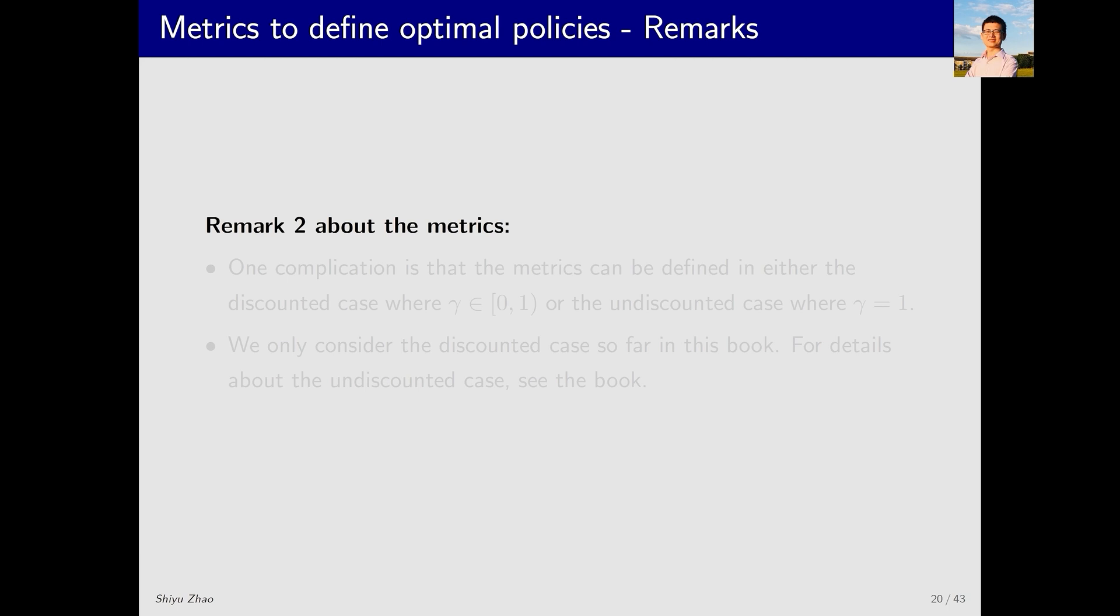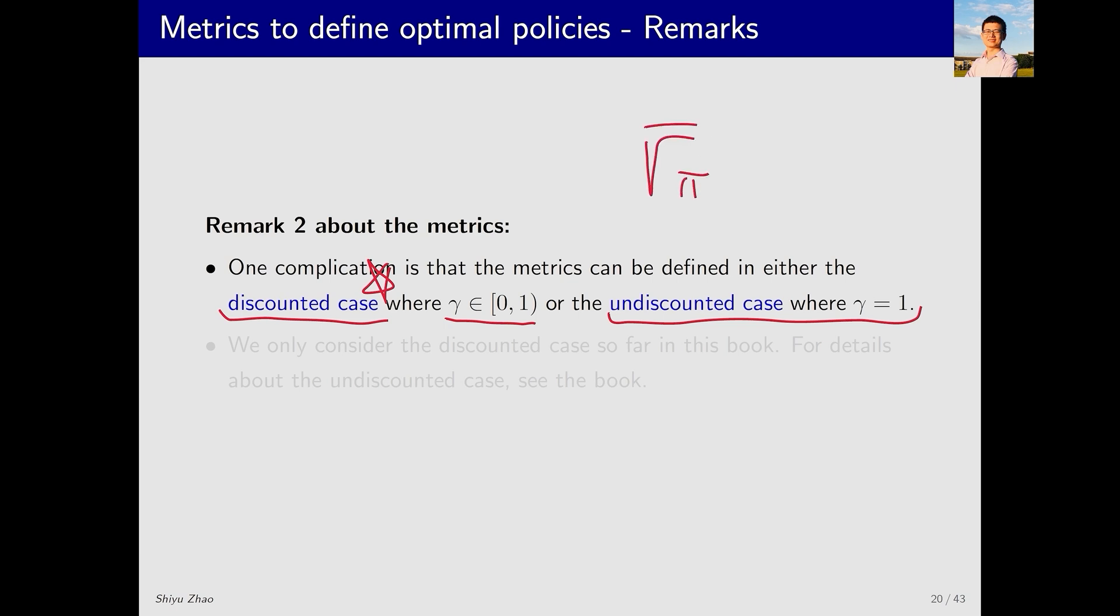The second remark is that, if you carefully examine the metrics, it's still a bit tricky. Why? Because we need to distinguish the discounted case and the undiscounted case. In the discounted case, there's a discount rate γ, which is less than 1. In the undiscounted case, γ equals 1. So far, we've only introduced the discounted case in the entire course. Why does the undiscounted case appear? Because the r̄_π metric merely involves immediate rewards, we don't need to consider the discount rate. Therefore, both the discounted and undiscounted cases are valid for this metric.